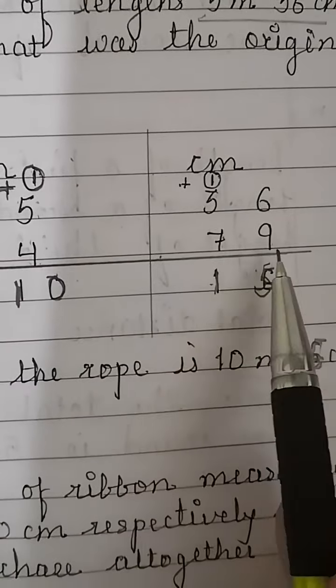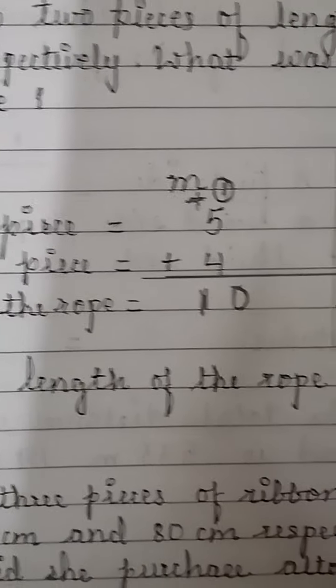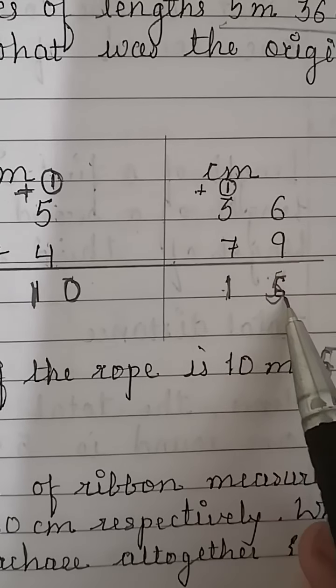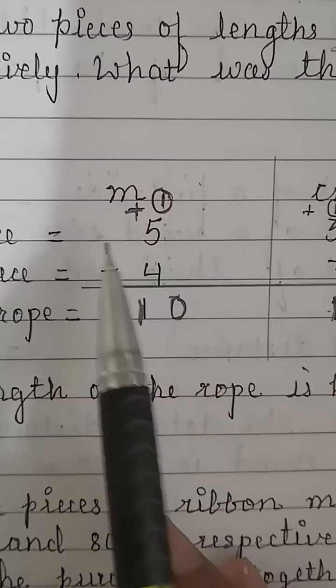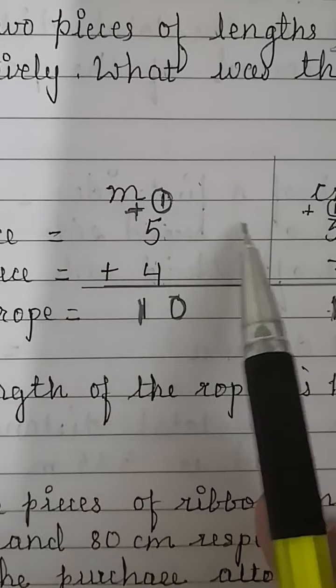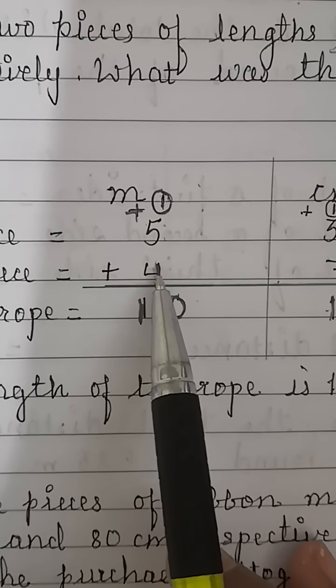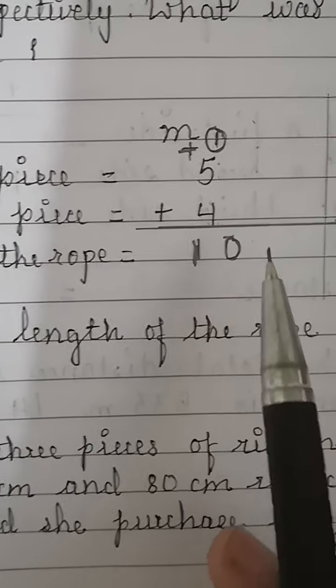We are asked to find the original length of the rope, so we need to add both lengths. We'll add the centimeters first: 6 plus 9 is 15, write 5 carry over 1. Then 7 plus 3 is 10, plus 1 is 11, write 1 carry over 1 to meters column. Now add the meters: 4 plus 5 is 9, plus 1 is 10. So the original length of the rope was 10 meter 15 centimeter.